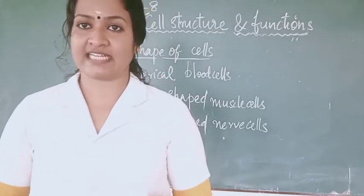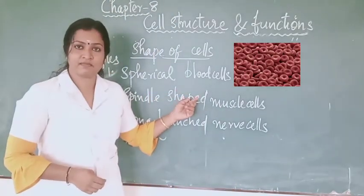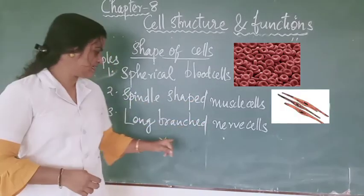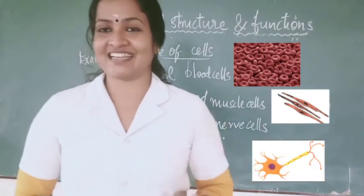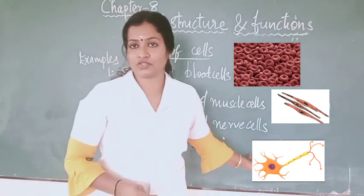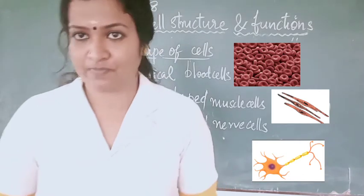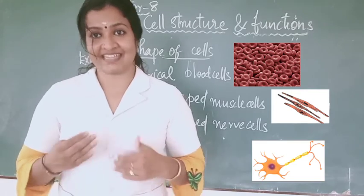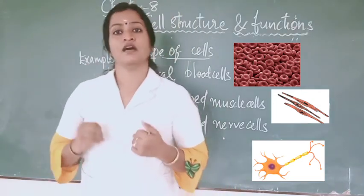Different shapes of cells are seen in our body. Examples are: spherical blood cells, spindle-shaped muscle cells, and long branched nerve cells. The longest cell in the human body is the nerve cell. You have to draw the structures of these three types of cells in your notebook. The function of the nerve cell is to send and receive messages, thereby controlling and coordinating various functions of the body.